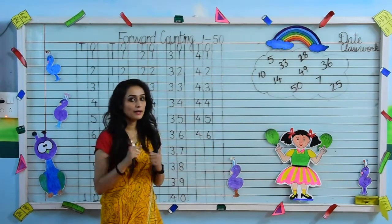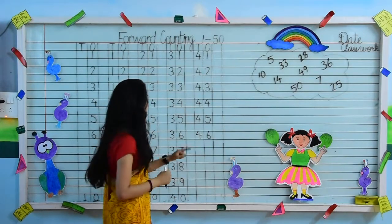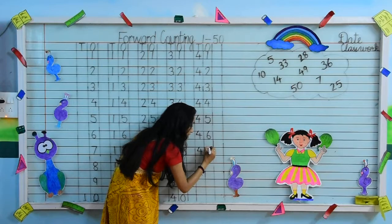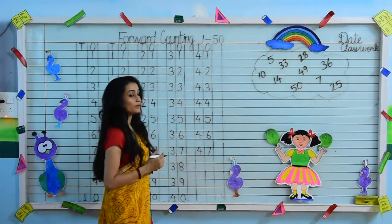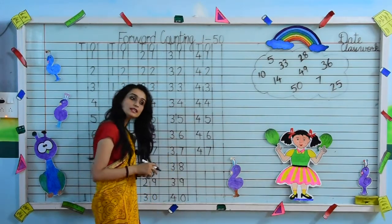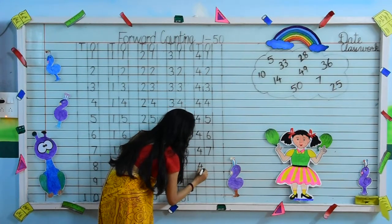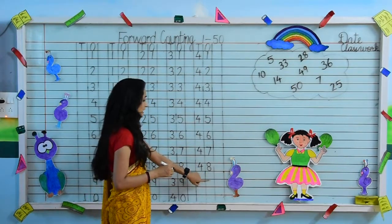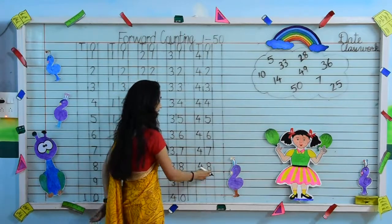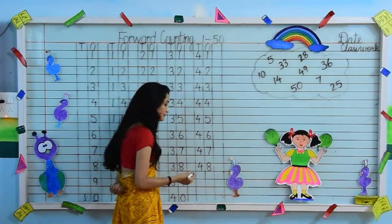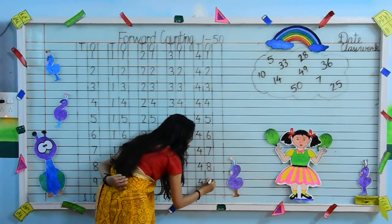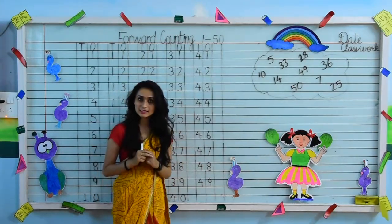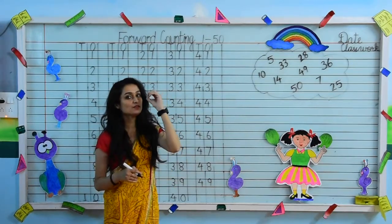After 46, which number should I write? Yes, the next number is 4, 7 — 47. After 47, next number is 4, 8 — 48. After 8, next digit is 9, and we copy 4. So 4, 9 — 49. After 49, our last digit is 5, 0 — 50.